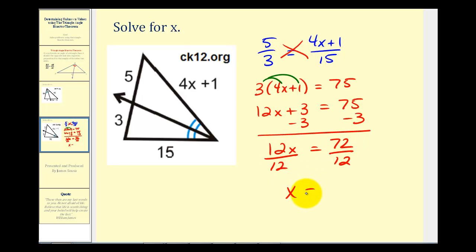So we have X equals 72 divided by 12, that would be 6. So if we were asked to determine the length of this side, we would substitute 6 for X. We'd have 4 times 6 plus 1. So this side of the triangle would be 25 units long.